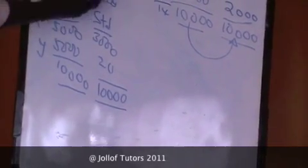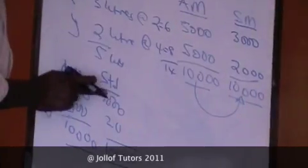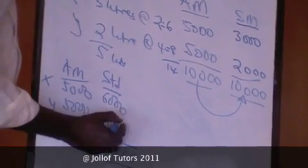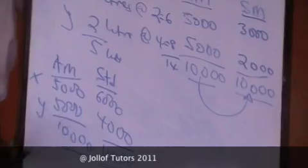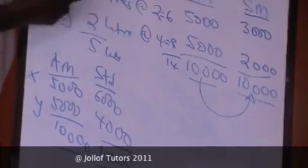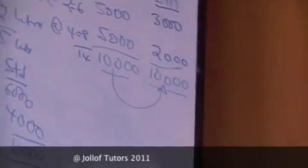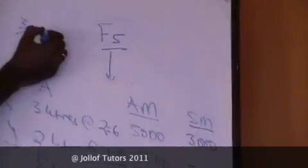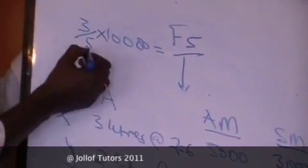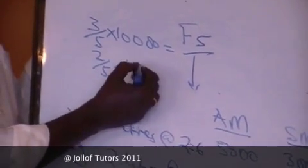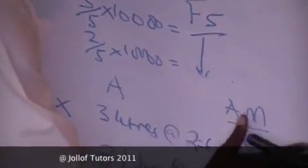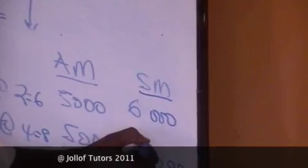Correcting that: 3,000 is 3 over 5 multiplied by 10,000 — that gives us 6,000 liters. And 2 over 5 multiplied by 10,000 gives us 4,000 liters. So our standard mixture is 6,000 liters for X and 4,000 liters for Y.